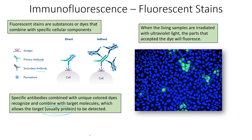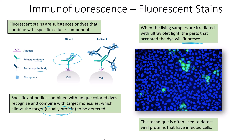When the living samples are irradiated with ultraviolet light, the parts that accepted the dye will fluoresce. In this tissue sample image, most cells are not glowing, but some cells are fluorescing because they have been infected. When we send these fluorescent markers in and they attach specifically to that viral protein antigen, the infected cells accept the dye and therefore glow. This technique is often used to detect viral proteins in infected cells and also to identify cancer cells when examining a tissue sample.